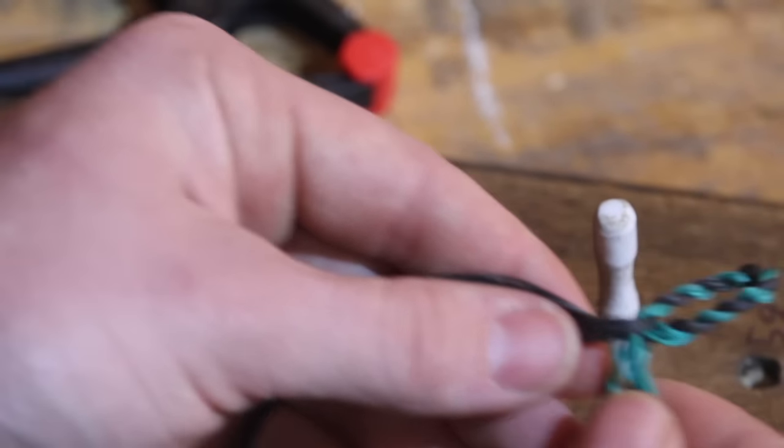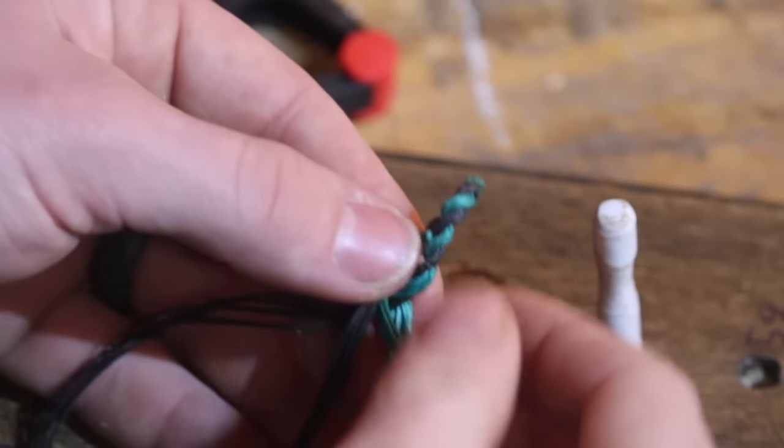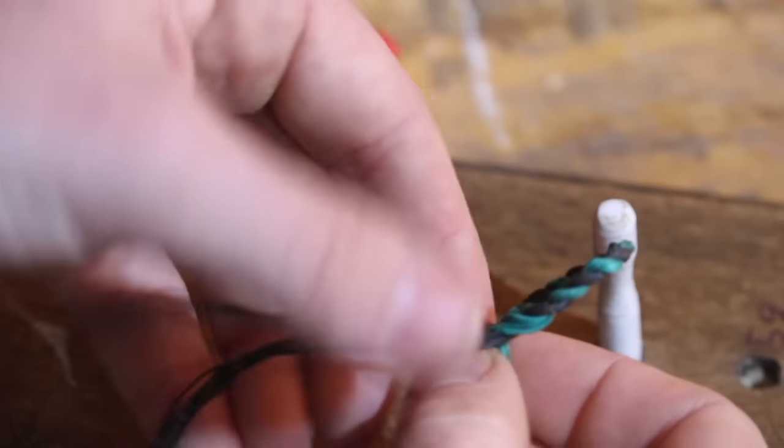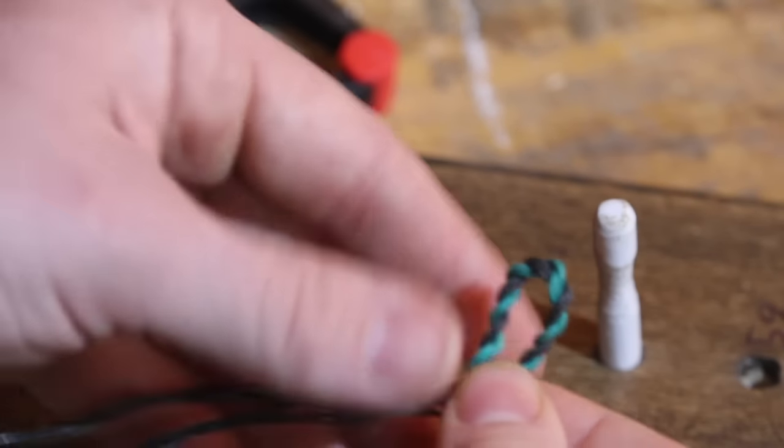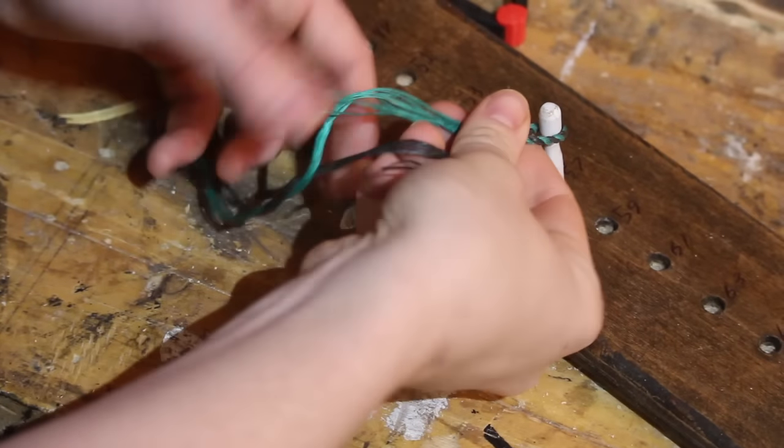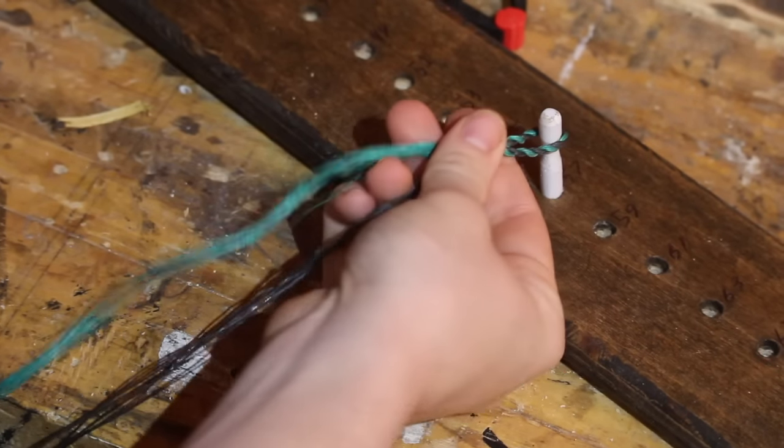Once you've got the string long enough for the loop size you want, it's time to twist it together. I put the green on green and the black on black but it doesn't really matter. The idea is that you join the strings and you start the Flemish twist to make the loop.